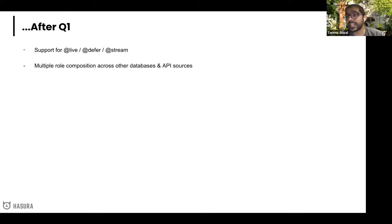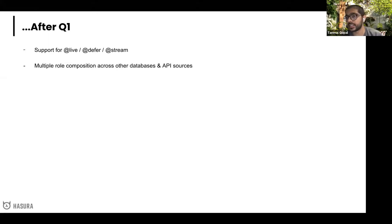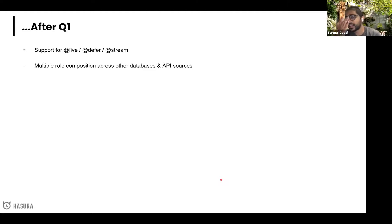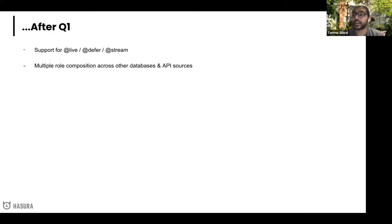We're also going to be extending our multiple role composition to other databases and other API sources, laying the foundation in the first three months so we can start working across other databases. We'll start with Postgres, remote schemas, and actions, then later move the authorization system to other data sources as well. There's a tremendous amount of other stuff in the pipeline that you can track on GitHub, but these are the big fundamental changes happening at Hasura. That's the update from my end — any questions, feel free to reach out on Twitter, Discord, or chat here.